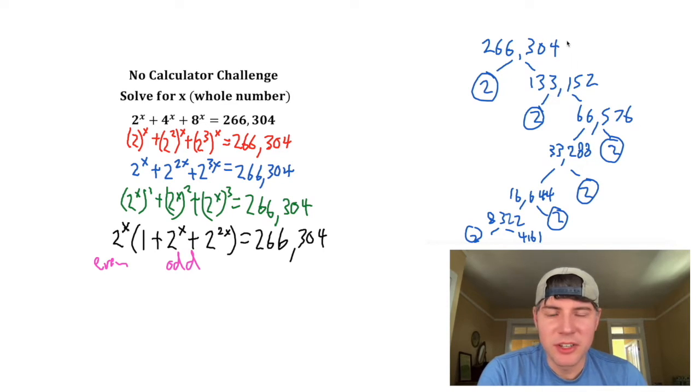So we can rewrite 266,304 as 2 to the 1, 2, 3, 4, 5, 6. We can rewrite it as 2 to the 6, and I'll just say times 4,161.